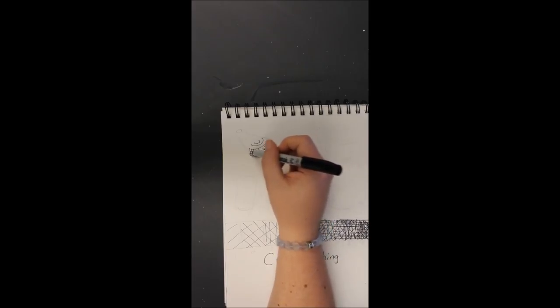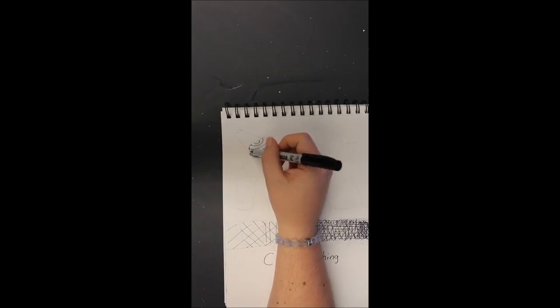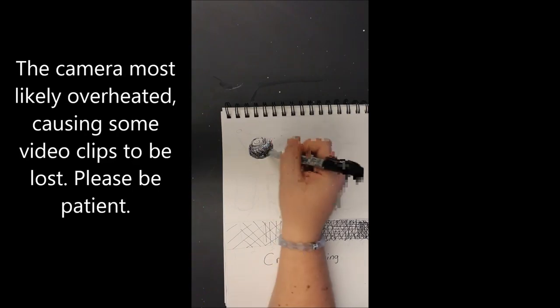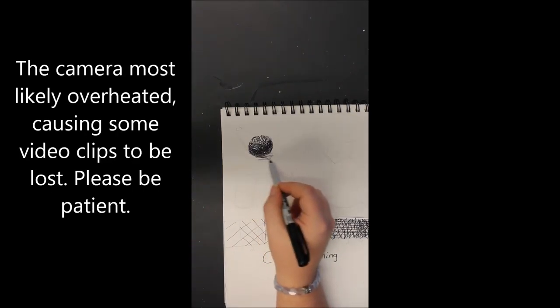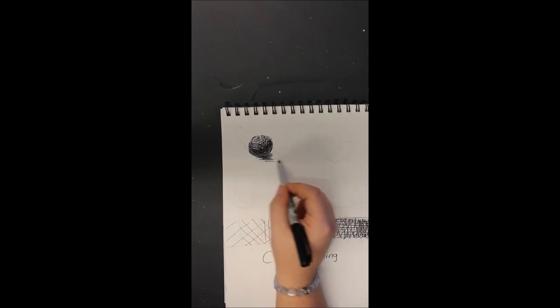So I'm just going to keep overlapping, trying to go in those curves, making sure that I'm giving that illusion, keeping in mind that I'm overlapping. So keeping my lines close together for where I want it to be darker, and then spreading further apart.